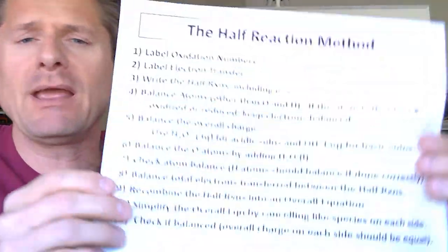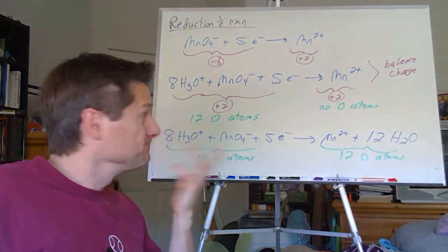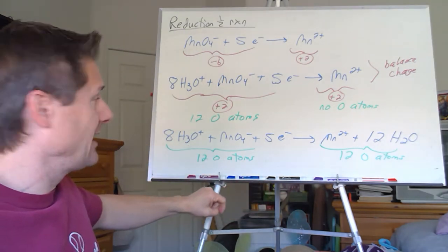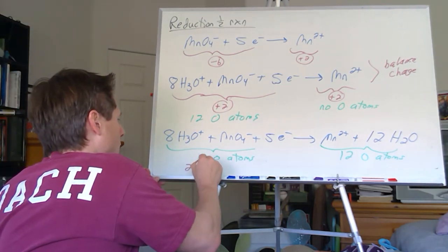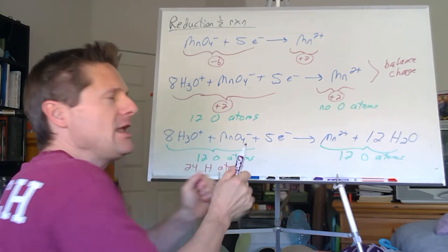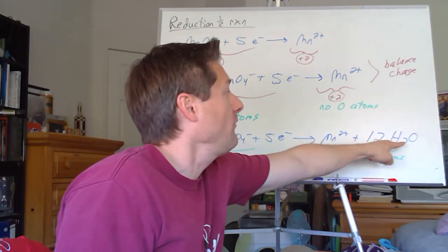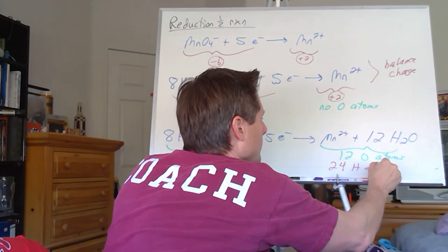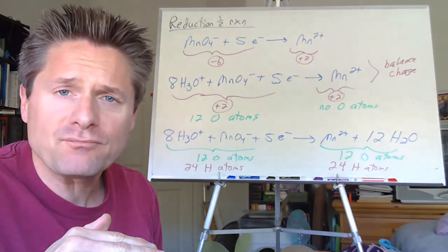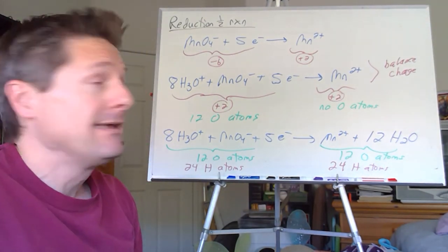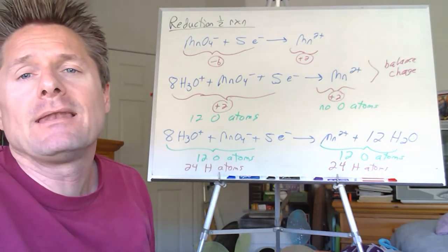Now step seven: check the hydrogens. If we did everything right, the hydrogens should be good to go. I've got eight times three — eight times three is 24 hydrogens on the left. And twelve times two is 24 hydrogens on the right. 24 equals 24 — yes! Halfway there. I know I'm good, so I can move on to the oxidation half reaction. Do the oxidation half reaction and see if you get what I get. Then we'll recombine them in step eight and simplify the equation.